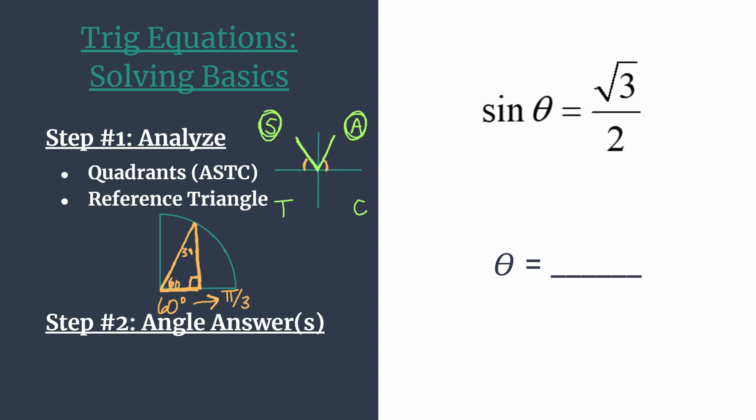So the angle in quadrant one is relatively easy. We know that that reference angle is pi over three, while an angle in the first quadrant is actually its own reference angle. We just rotate in that counterclockwise direction, pi over three radians. So one of our answers is going to be pi over three. That comes from our first quadrant angle.